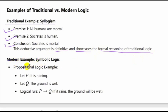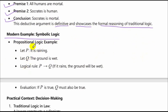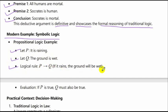Modern examples of symbolic logic: propositional logic example — let P mean 'it is raining,' let Q mean 'the ground is wet.' Logical rule: P → Q (if it rains, the ground will be wet). Evaluation: if P is true, Q must also be true.